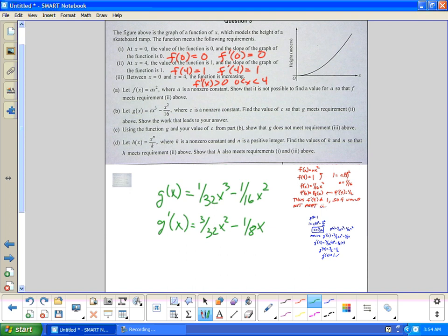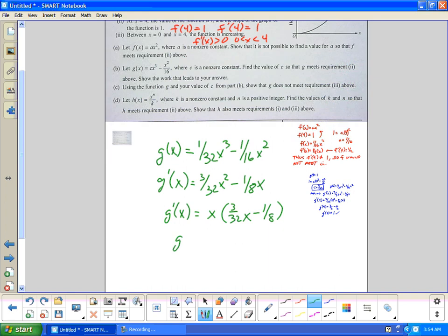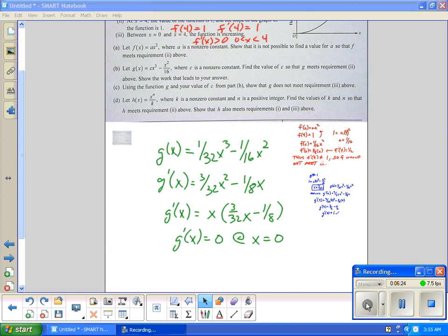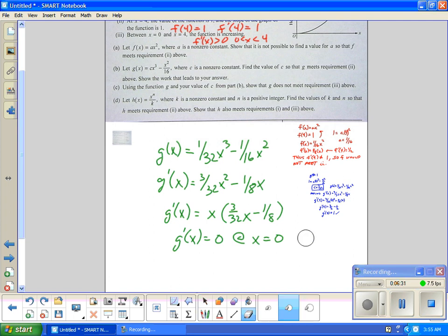This is a calculator problem. I see there's an x common, so I would factor, I think. g'(x) equals x times (3/32)x minus one-eighth. And I can solve this. So obviously, g'(x) would equal zero at x equals zero. And one-eighth divided by three-thirty-seconds. So when I do one-eighth divided by three-thirty-seconds, I get four-thirds, and x equals four-thirds.